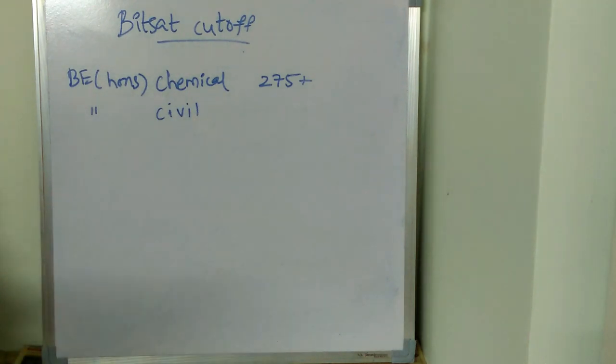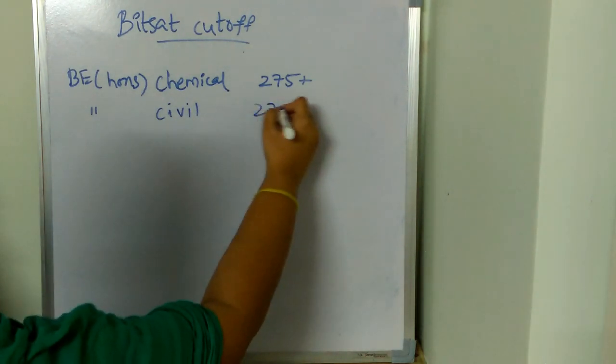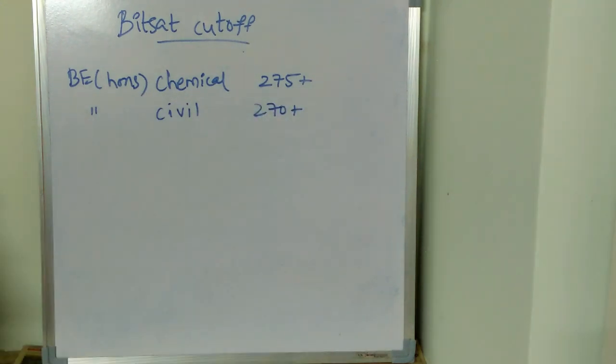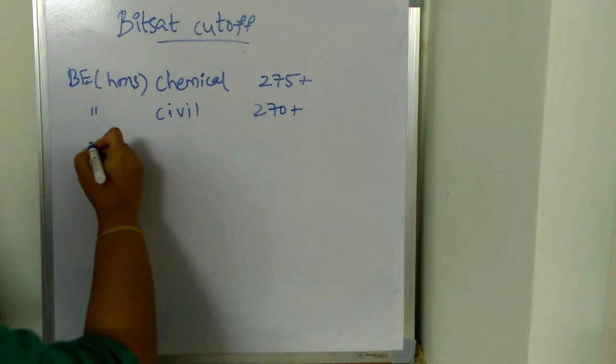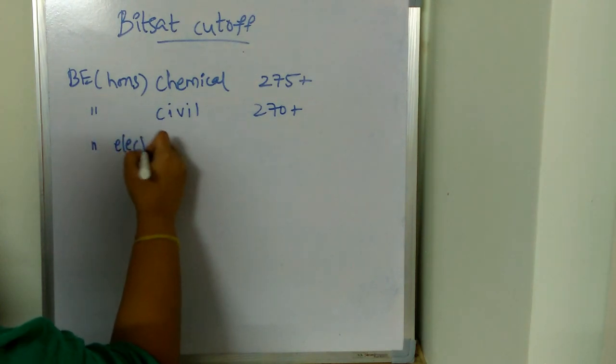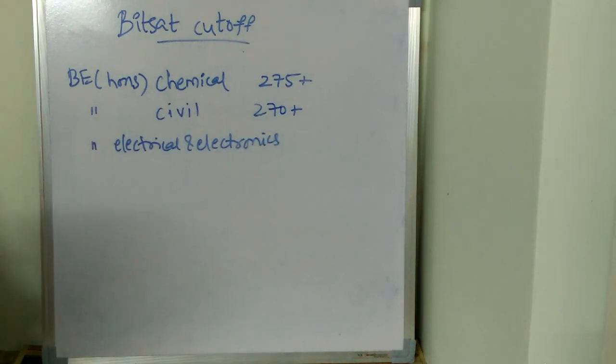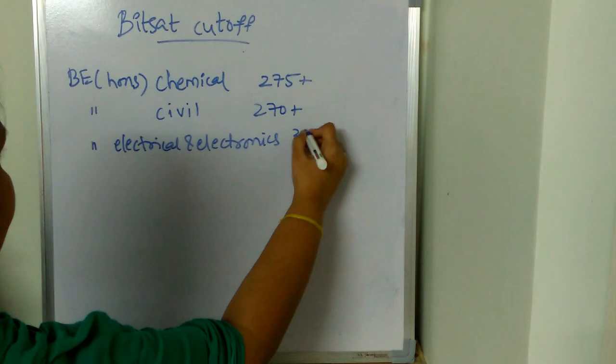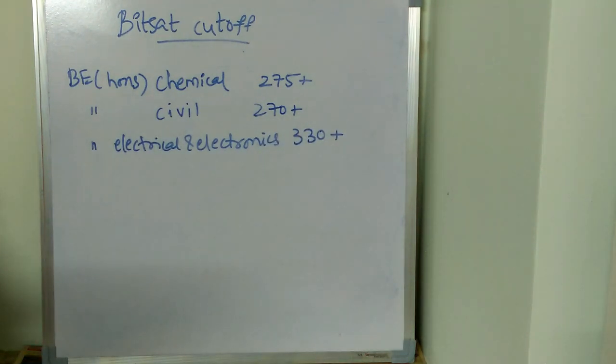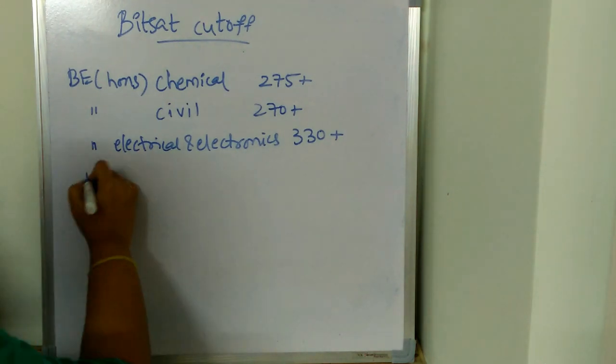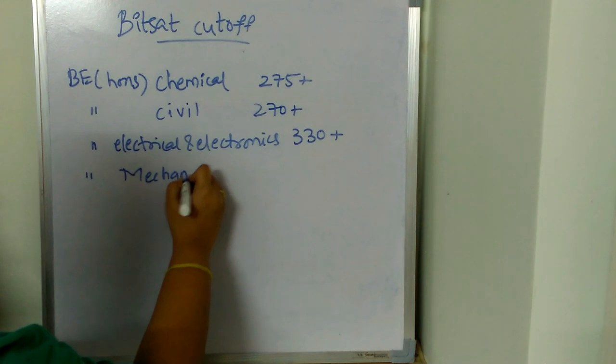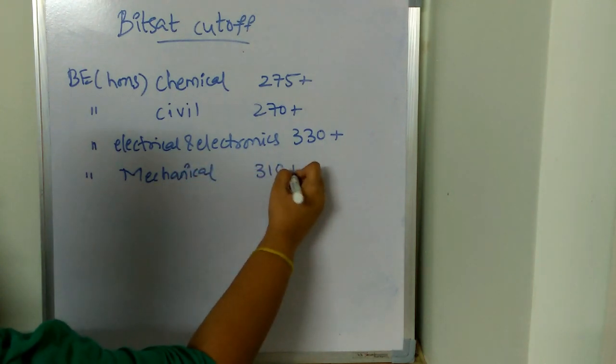For BE Honors Electrical and Electronics, the cutoff is going to be high. It's going to be above 330, 330 plus. For BE Honors Mechanical, the cutoff is going to be 310 plus.